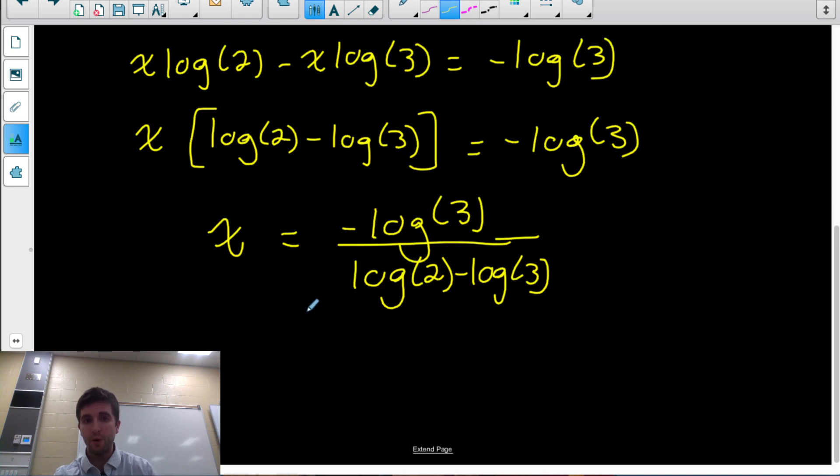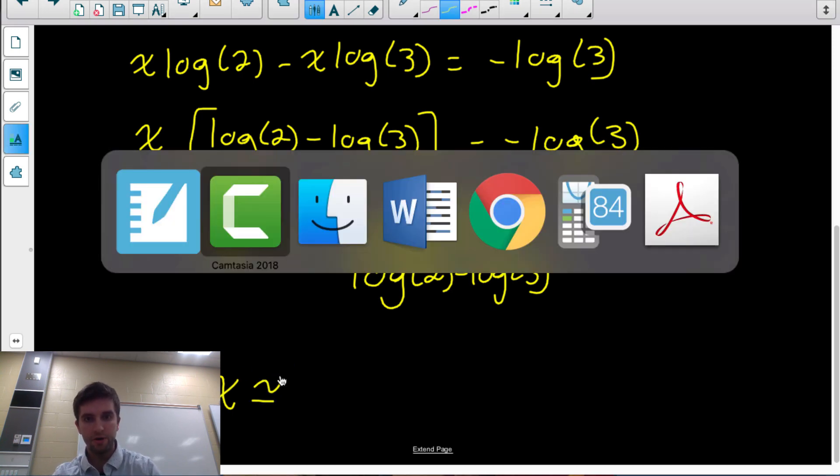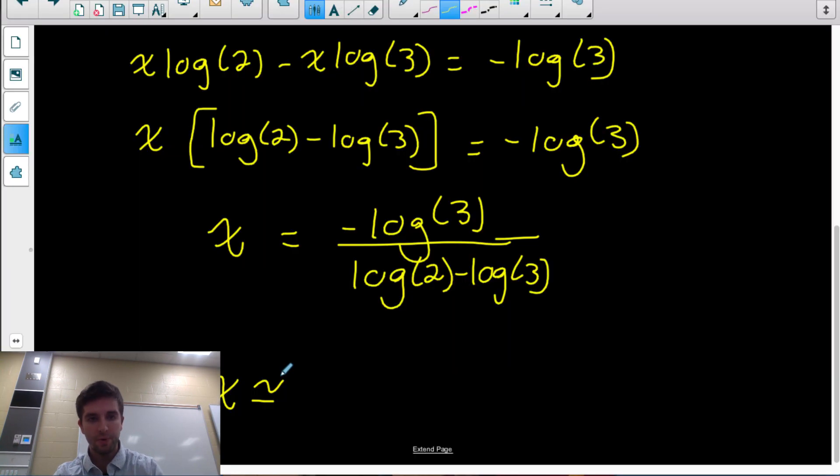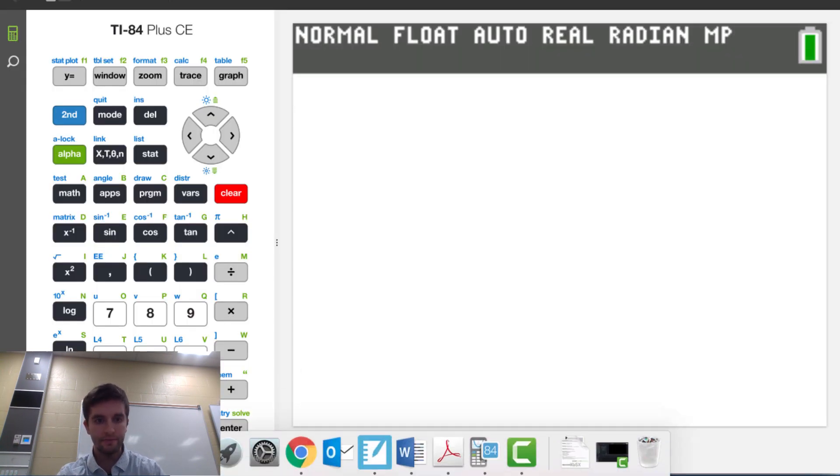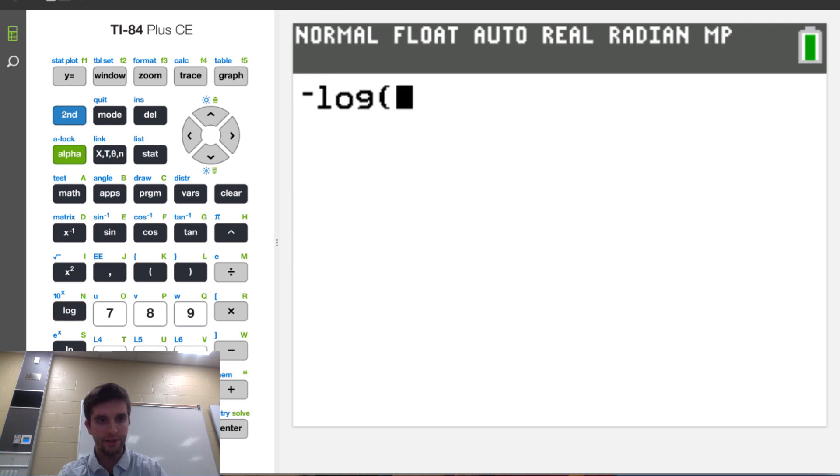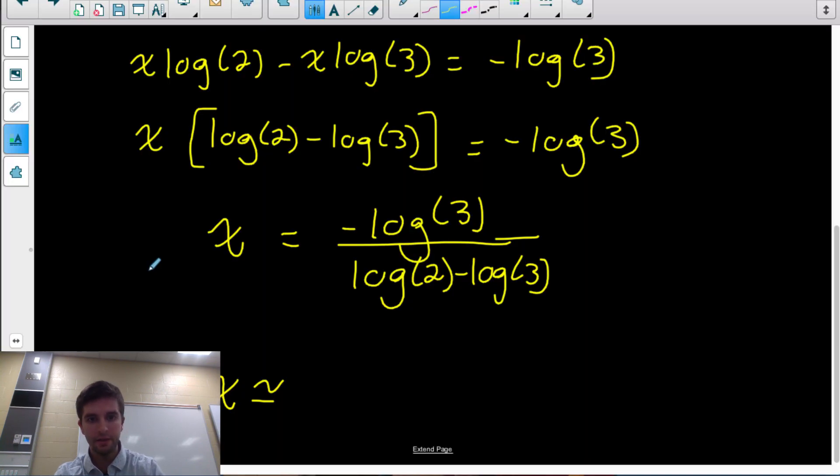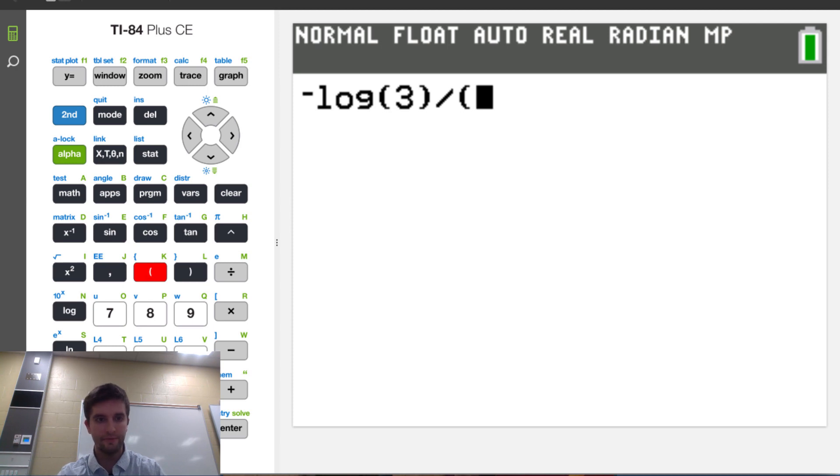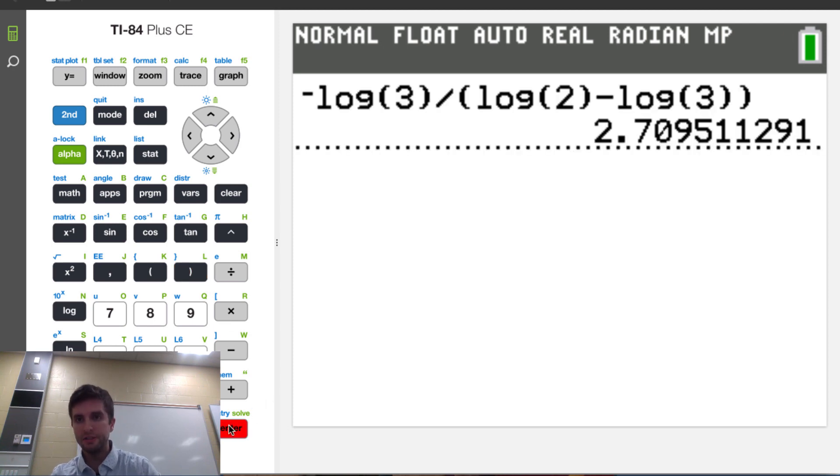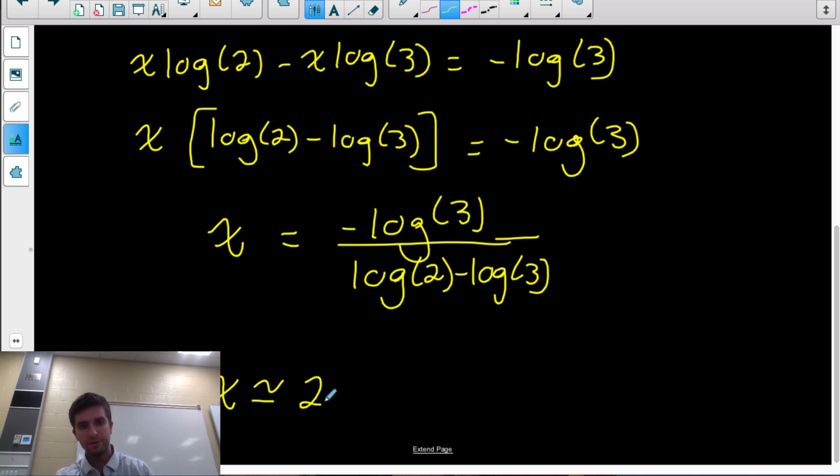And then we would just evaluate that if we wanted an approximate answer. But if we wanted an exact answer, well, that is the exact answer. If we wanted an approximate answer, we could type that in. So I'll get my calculator here. We would want to type negative log 3, and I want to divide that by log 2 minus log 3. Which I could just write as log 2 divided by 3, but I'll write log 2 minus log 3. And my approximate answer is going to be 2.71 to two decimal places. About 2.71.